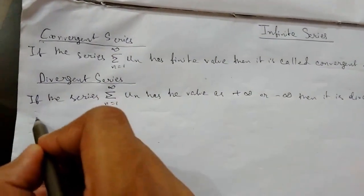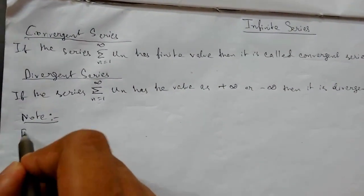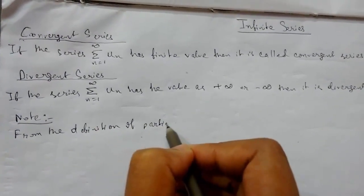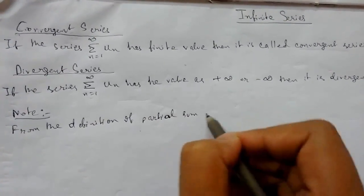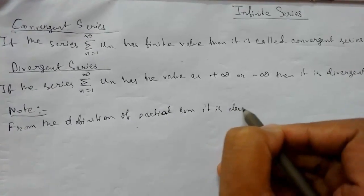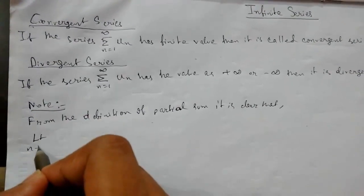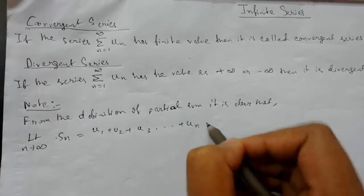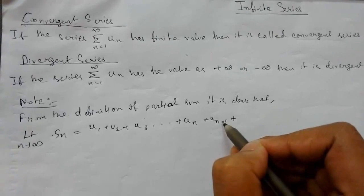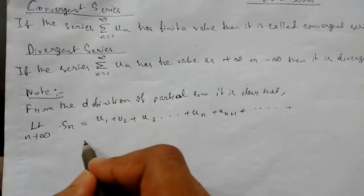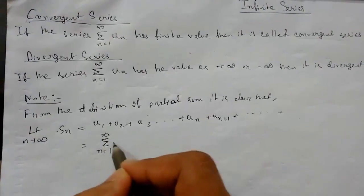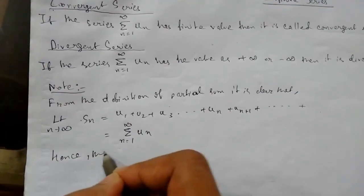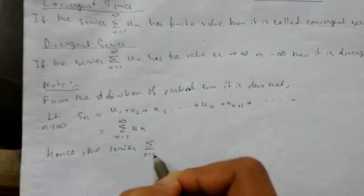Now let us take a note. From the definition of partial sum that we discussed earlier — this will be the partial sum — it is clear that the limit as n tends to infinity of S_n, which is u1 + u2 + u3 + ... + u_n + u_(n+1) and so on up to infinity, can be written as summation n from 1 to infinity of u(n). So this limit is equivalent to the series.